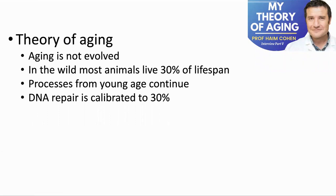We then discussed Professor Cohen's theory of aging. Aging is not evolved because in the wild almost no animals age — the average lifespan is about 30% of a total lifespan. For example, in the field a mouse will live six or seven months, while in the lab they can live two years. This means that processes which are effective when we are young continue and lead to ill effects later in life — mTOR is an example of this. It also means that DNA repair mechanisms are calibrated for 30% of the lifespan, so for humans 20 to 30 years, rather than the 80 years that we are now living. This is one of the reasons activating Sirt6 can help, as it is related to DNA repair.